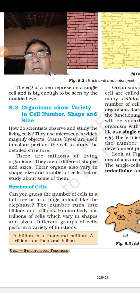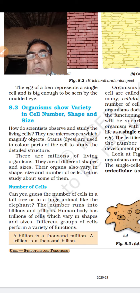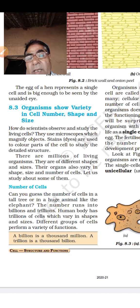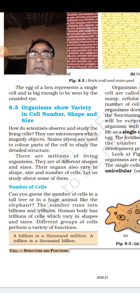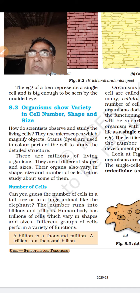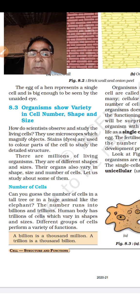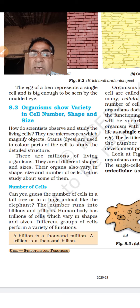A human body has trillions of cells which vary in shape and size. Different groups of cells perform a variety of functions. If it is a group of cells performing a particular function, it is called a tissue.